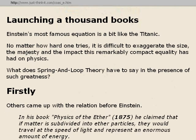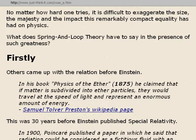Firstly, others came up with this relation before Einstein. In his book Physics of the Ether, published in 1875, Samuel Tolver Preston claimed that if matter is subdivided into ether particles, they would travel at the speed of light and represent an enormous amount of energy. This is on Preston's Wikipedia page — 30 years before Einstein published Special Relativity.